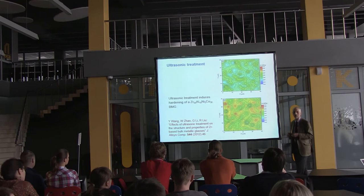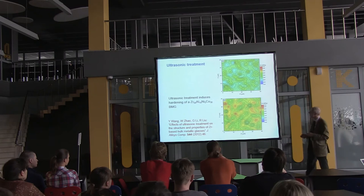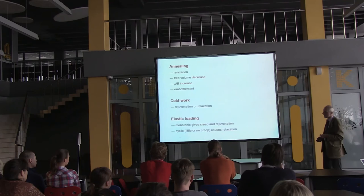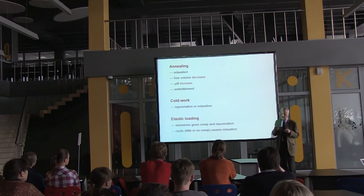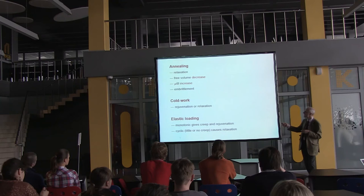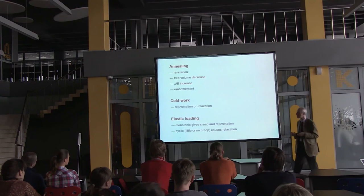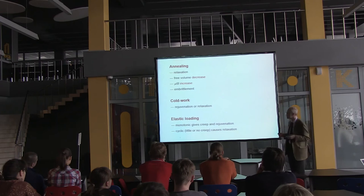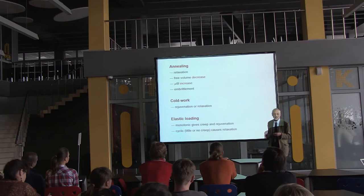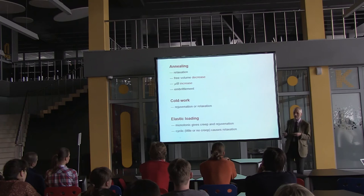Another example: ultrasonic treatment of the glass makes it harder — a hardness map shows a slightly more inhomogeneous and generally higher hardness. So the overall picture is: a glass has a range of possible states. Annealing causes it to relax — its volume decreases, elastic properties change, and the glass generally becomes more brittle, which is not what we want. So the reason for this research is that annealing changes properties in the wrong direction; we want some mechanism for the opposite — for unannealing.